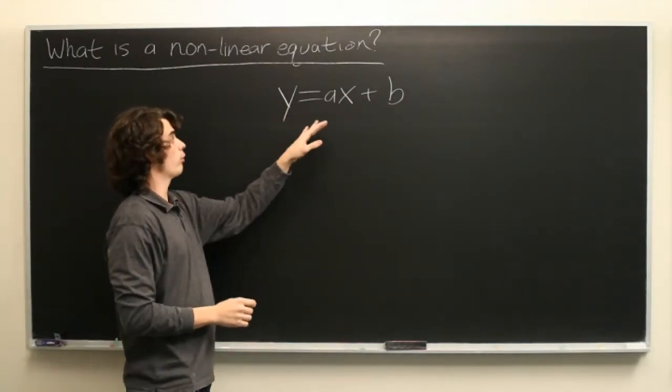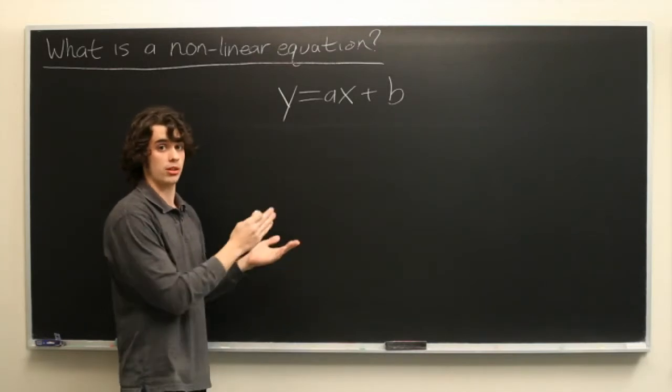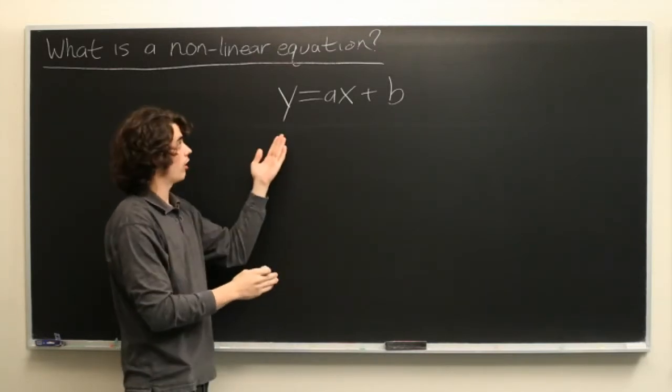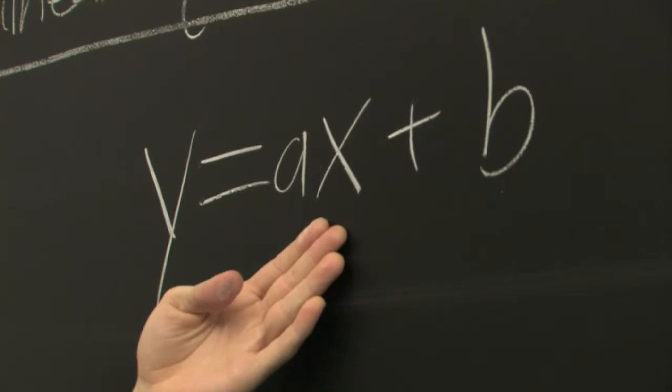We might be able to rearrange this equation into different forms, but essentially that's all there is to it. Two variables, one of them raised to the first power, and a constant.